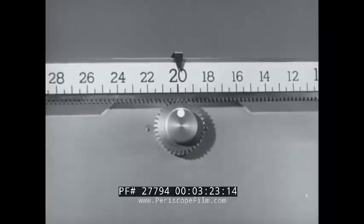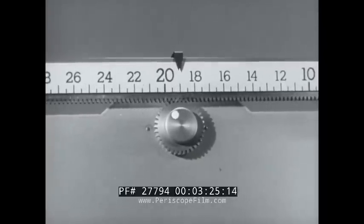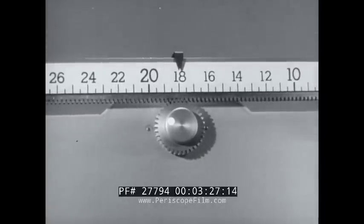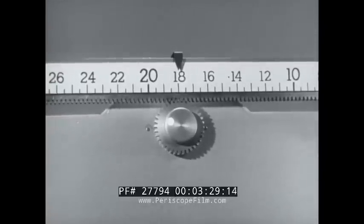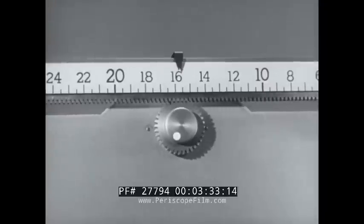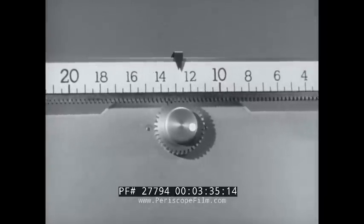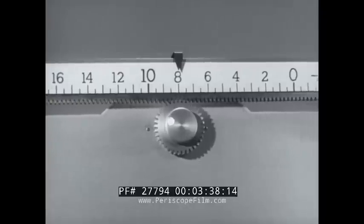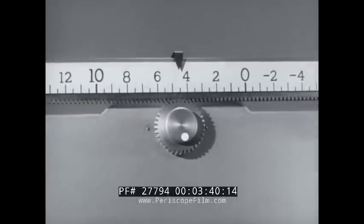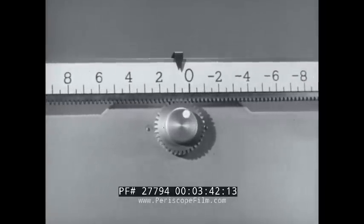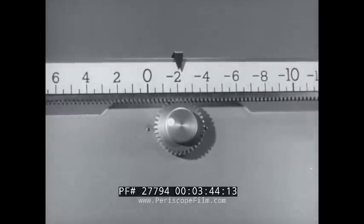Now add minus two by one-fifth turn in the opposite direction. The result, of course, is eighteen. Similarly, two complete revolutions in the minus direction subtract twenty. And in this case, the result is minus two.